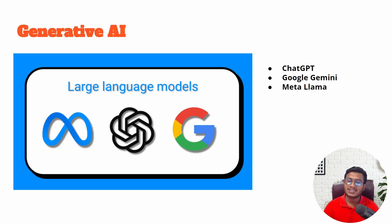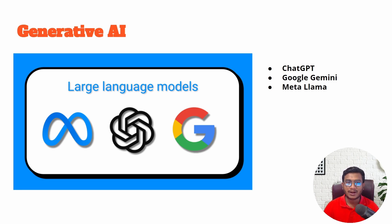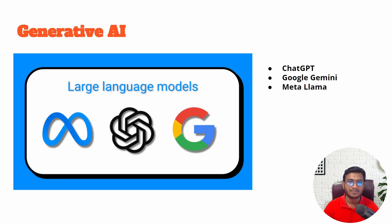These are the applications you are using in your day-to-day life. I hope everyone has used ChatGPT at least. With ChatGPT, we can give any kinds of prompts, do conversation, do summarization, generate content, generate code, and do text summarization — any kinds of tasks we can perform. Similarly, Google has developed their own product called Google Gemini, with which we can perform the same things.